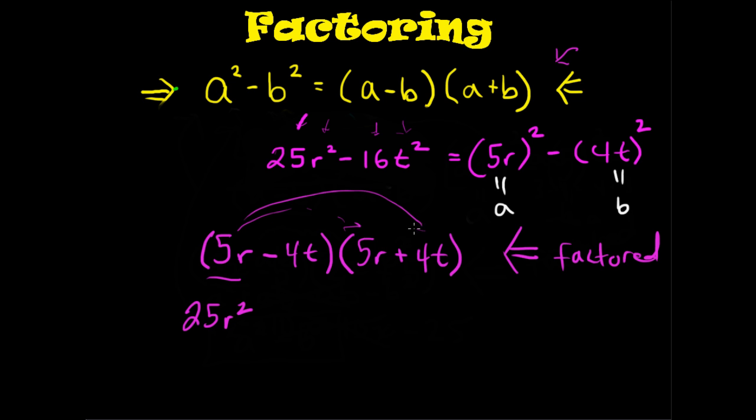Now we distribute through here. We get plus 20rt. Then, from distributing the second term, we get negative 20rt minus 16t squared. So notice, once again, the middle terms do cancel out, and you are left with a difference of two squares.